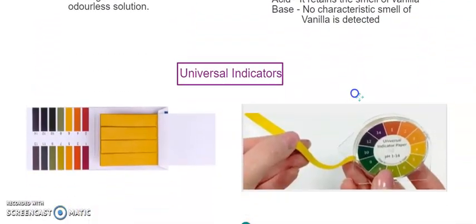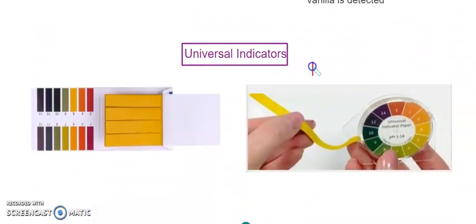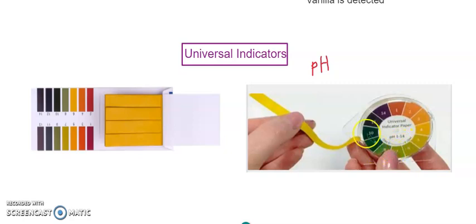The universal indicator is called the pH paper. I will discuss pH in detail in coming videos, but pH paper is used to detect any type of acid and any type of base. Different colors on the strip indicate different acids and bases. A single paper is used, which is why it is called the universal indicator — just one strip is enough to detect whether a given solution is acid or base.